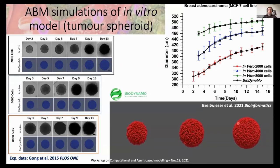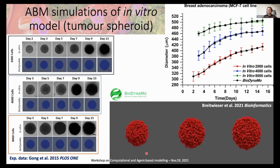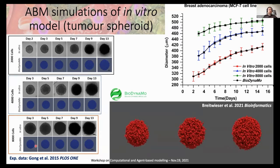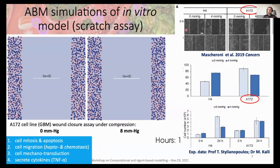Next is another demo of agent-based modeling using BioDynaMo. This is work done within the BioDynaMo consortium, already published in the Bioinformatics journal. Here we simulate the development of a specific cancer cell line obtained from public literature, effectively simulating the outgrowth of these spheroid experiments. We then compare in silico results against in vitro results.